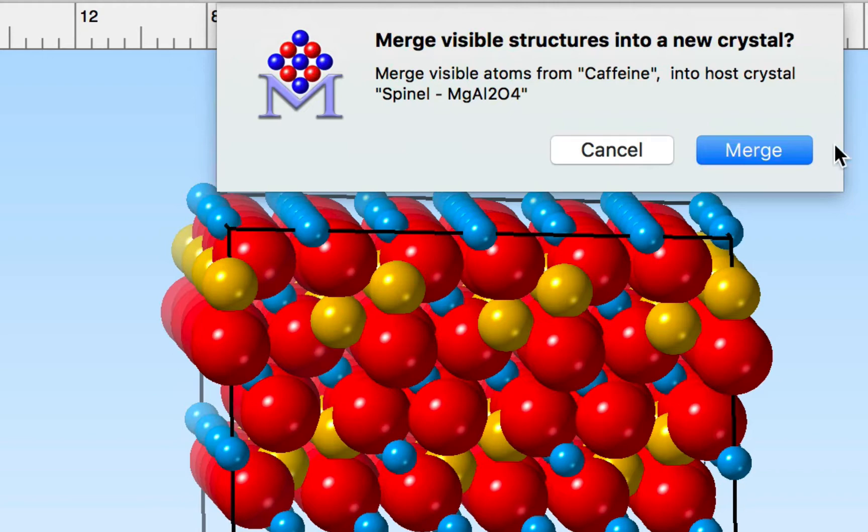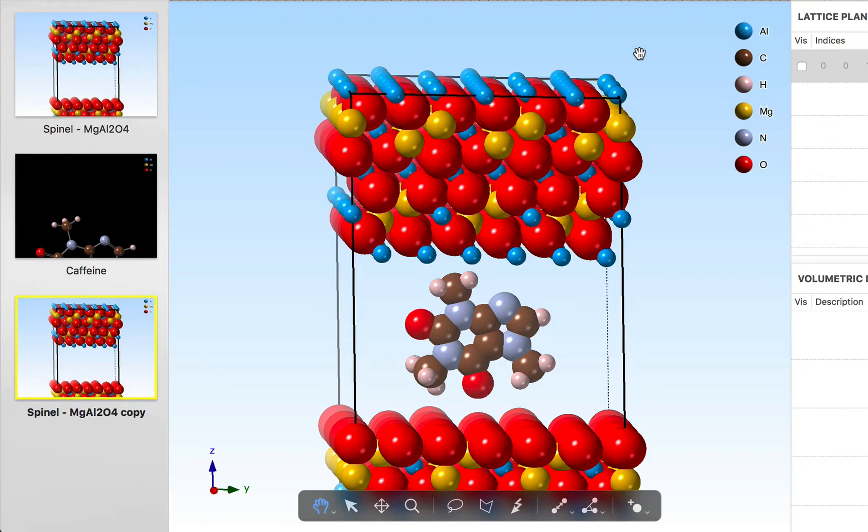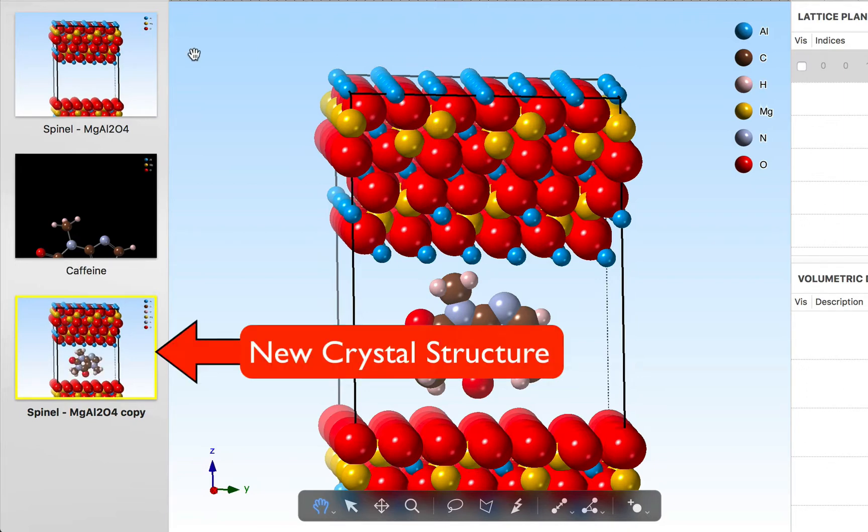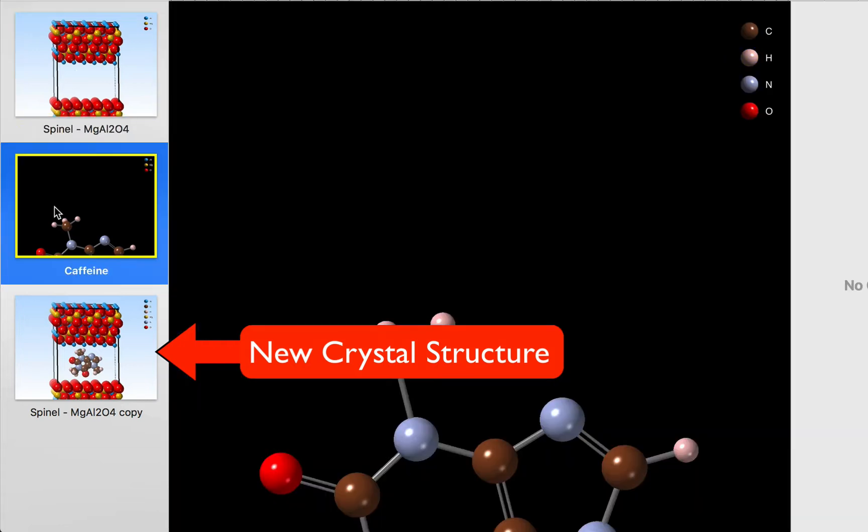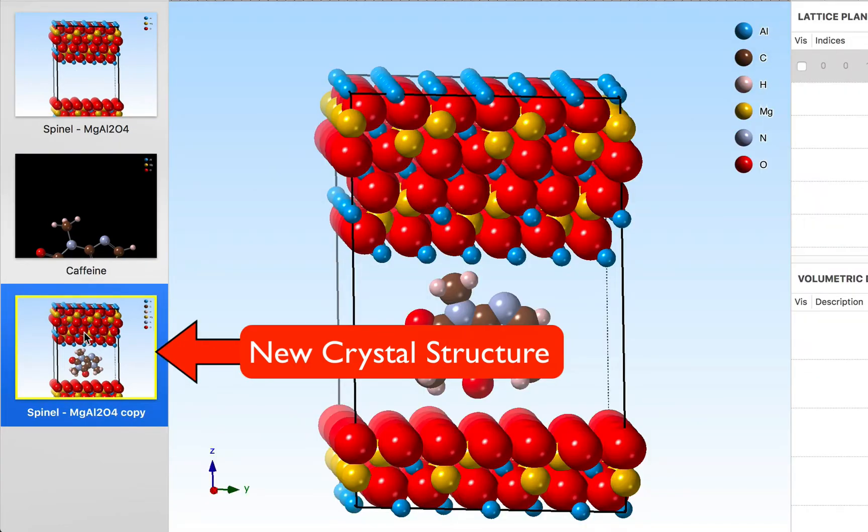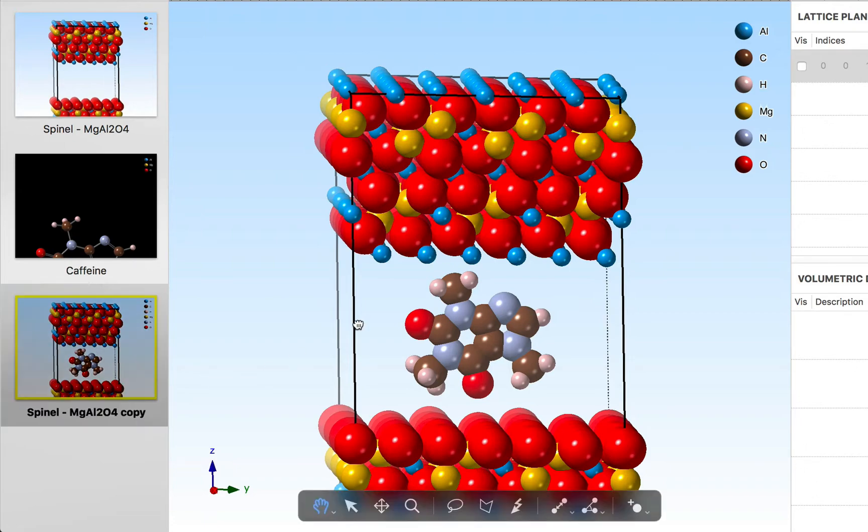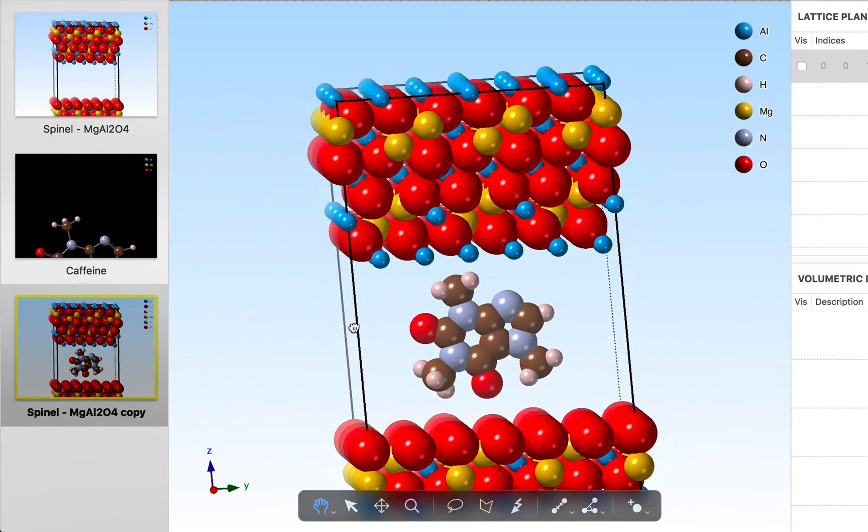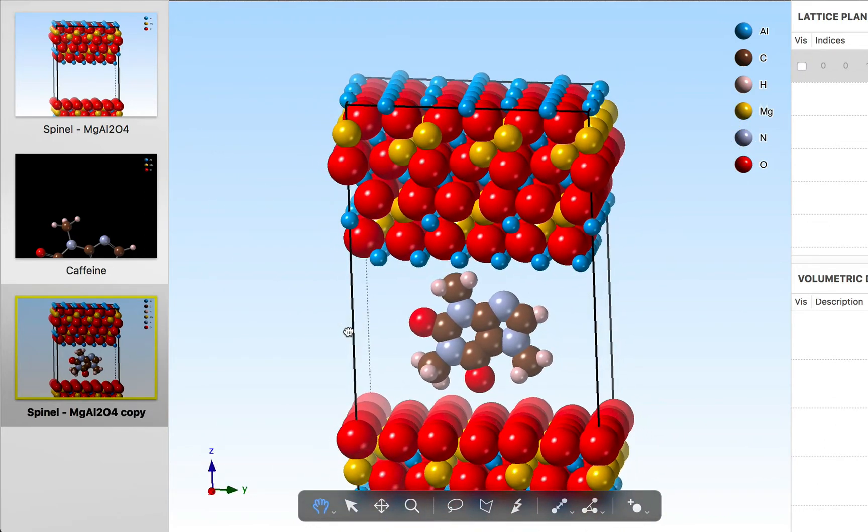That creates a new structure so we have our original structure the crystal with a space, we have our molecule which we moved, and we now have a new crystal structure which contains atoms of carbon and hydrogen and oxygen inserted into a crystal lattice. This is the structure that one would export to another program like VASP for modeling and relaxation.